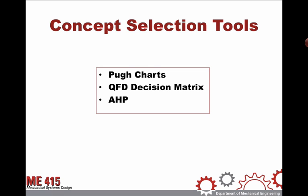We're going to look at three different concept selection tools: Pugh Charts, the QFD decision matrix within the House of Quality, and Analytical Hierarchy Process. Of these three methods, the Pugh Chart is the easiest to use and implement, but it's not quite as powerful as the QFD decision matrix or AHP.